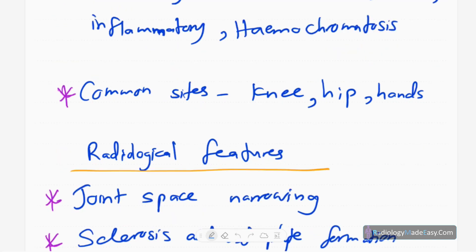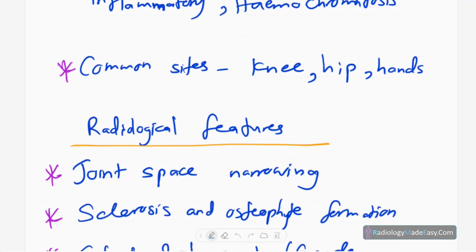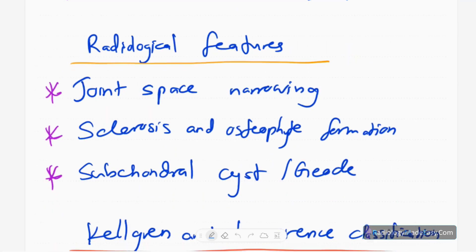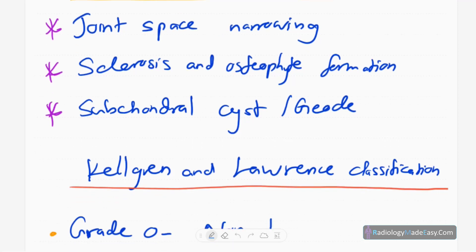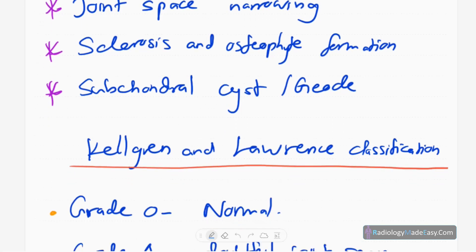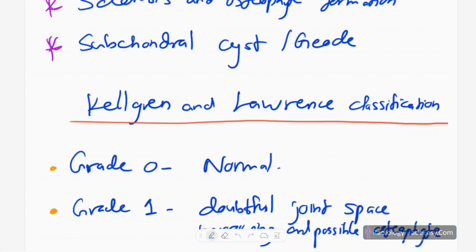The common sites which can get affected are the knee, hip, and hands. There are cardinal radiological features for osteoarthritis: joint space narrowing, subarticular sclerosis, osteophyte formation caused by new bone formation due to remodeling, subchondral geode formation, and in end stages, deformity of the joint.